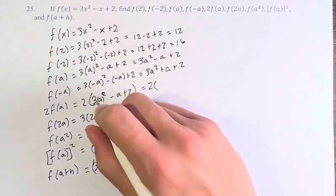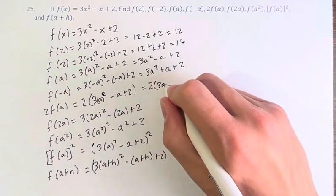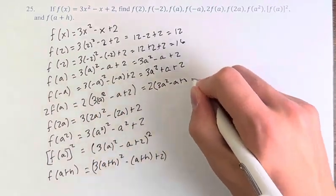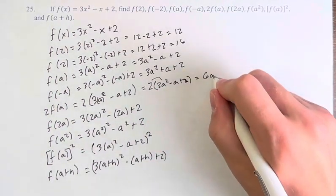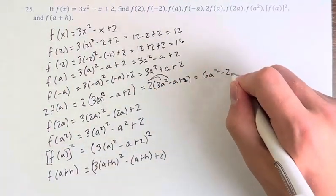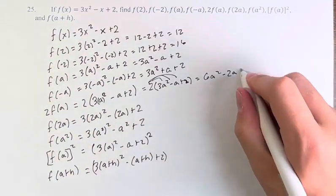2 times 3a squared is just 3a squared, minus a plus 2. This becomes 6a squared, 2 times 3, minus 2a, plus 2 times 2 is plus 4.